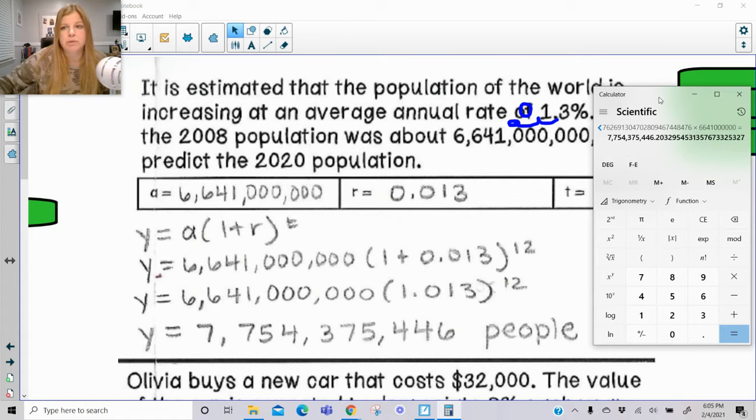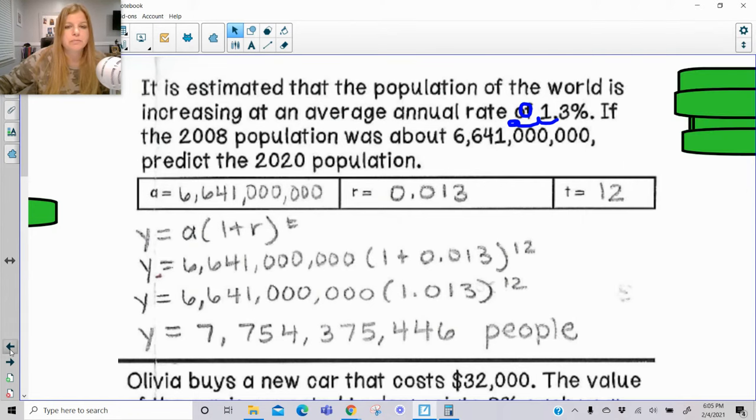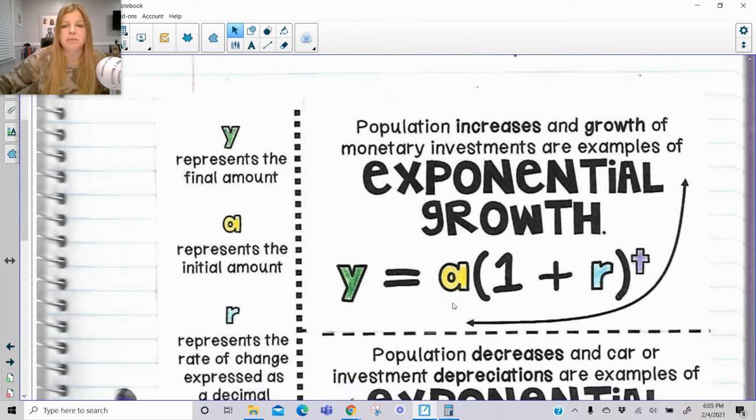And I get this 7,754,375,446 people. And again, I just rounded to the nearest whole number. And of course, it's just an approximation. So now let's go back. So that's exponential growth. The initial amount obviously was much smaller than what the final amount was because the value was increasing.